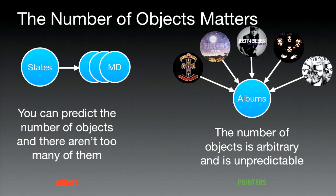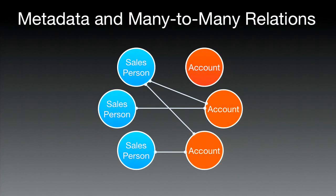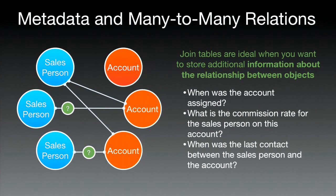For many-to-many relationships, like salespeople and accounts: for most scenarios, Parse relation is the easy choice — simple syntax, easy to create in the data browser, easy to view by clicking through to related objects. But if you want to keep track of additional information about the relationship — like when the account was assigned, what the commission rate is for this salesperson on this account, or when the last contact was between them — then the best scenario is to use a join table.